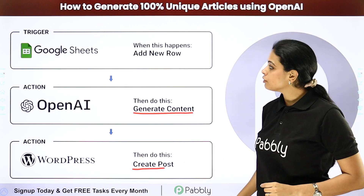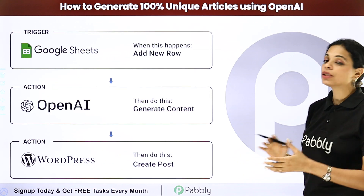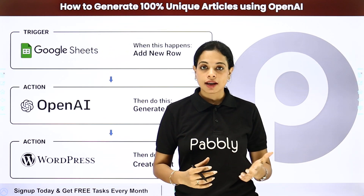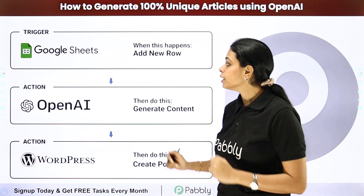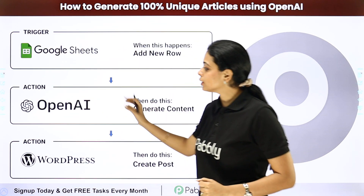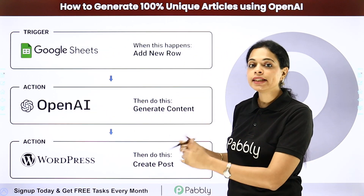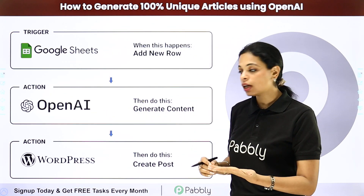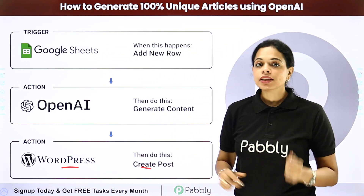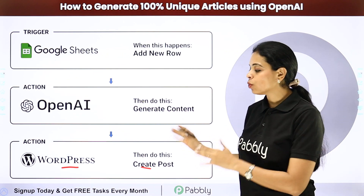The second example is how to generate 100% unique articles using OpenAI. It is a tedious task to write articles. Let's say you have the title in your Google Sheet or any other spreadsheet. With the help of OpenAI, you will be able to generate the content for your article and directly post it in WordPress. It is going to take no time and your work is done.